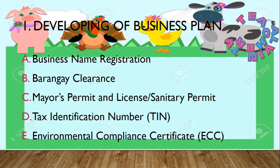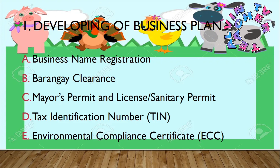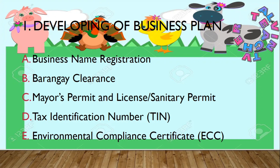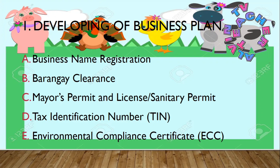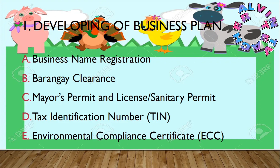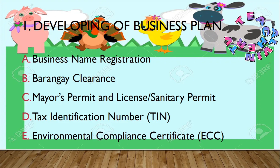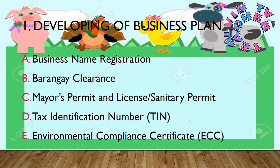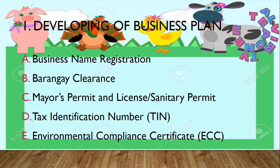The following are the required permits when putting up a farm business. Number one, developing a business plan: (a) business name registration, (b) barangay clearance, (c) mayor's permit and license or sanitary permit, (d) tax identification number or TIN, and (e) environmental compliance certificate or ECC.